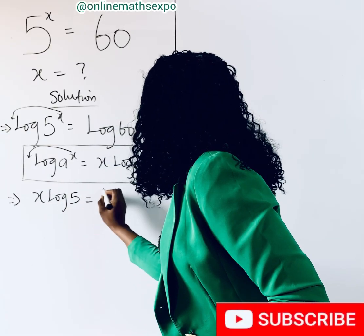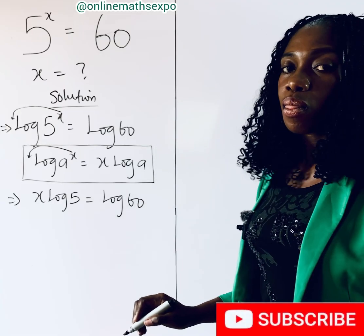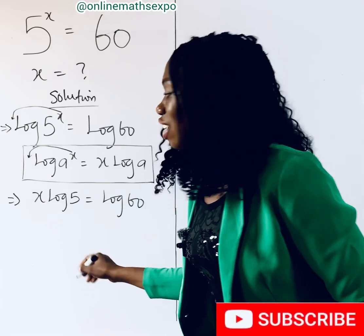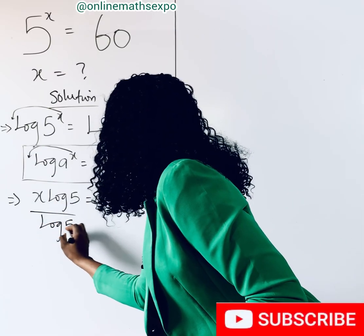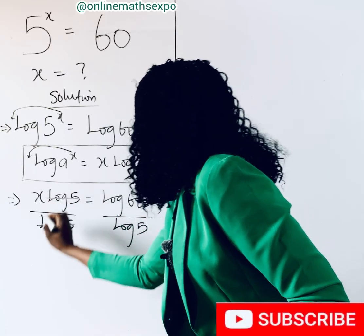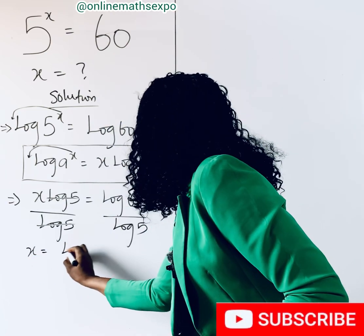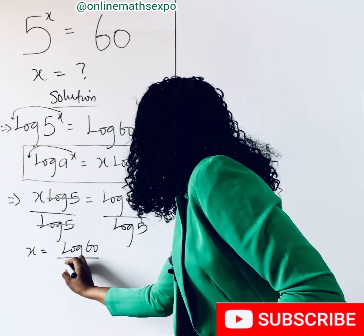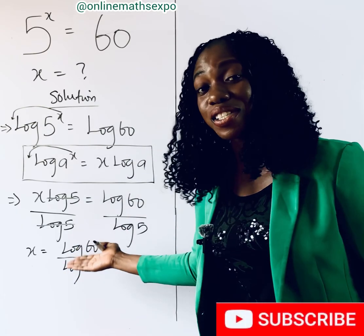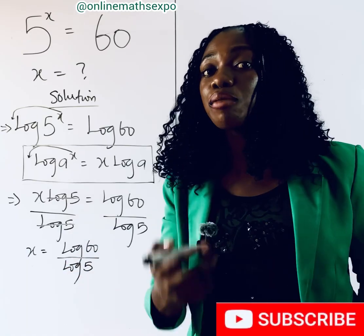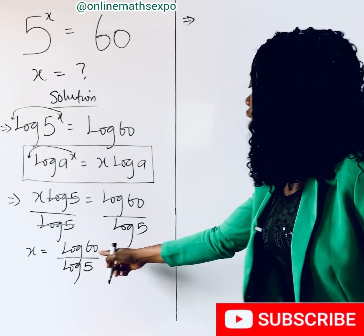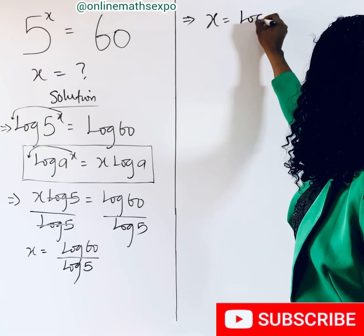We now have x · log 5 = log 60. Since we are solving for x, we divide both sides by log 5. This cancels the log 5 on the left, giving us x = log 60 / log 5. But don't be too quick to say this is your final answer — it's not yet simplified. Let me teach you what to do to simplify further.